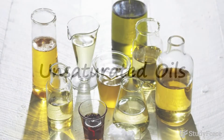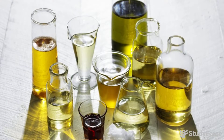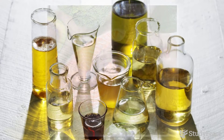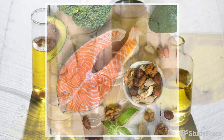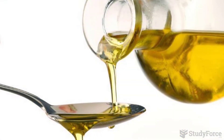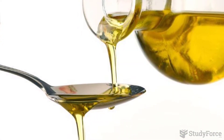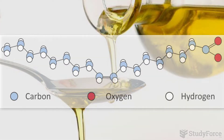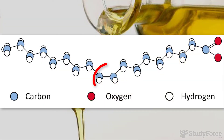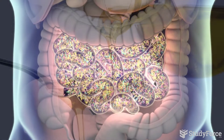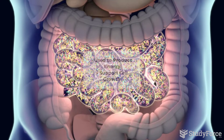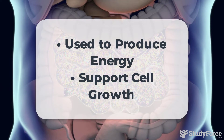Unsaturated oils are those that you find in plant-based foods such as seeds, nuts, and fish. At room temperature, they are liquid and are easily digestible because of their chemical structure that contains double bonds within their long fatty acid chains. As you may have heard, they are healthy for you. We metabolize unsaturated oils into energy and use them to support cell growth.